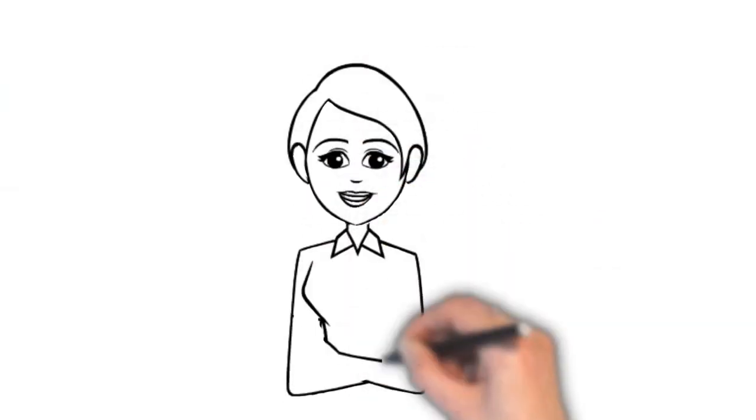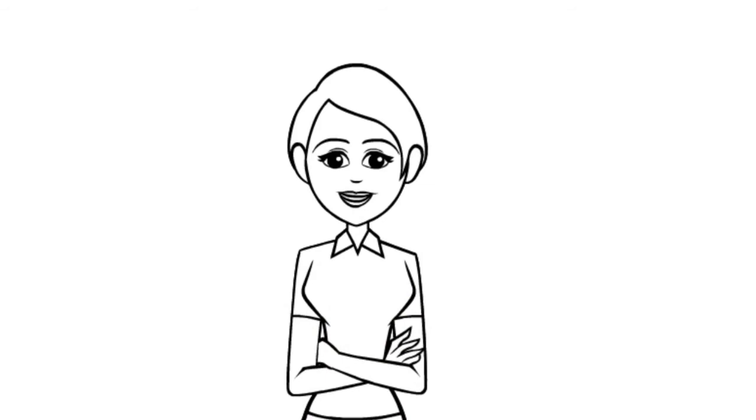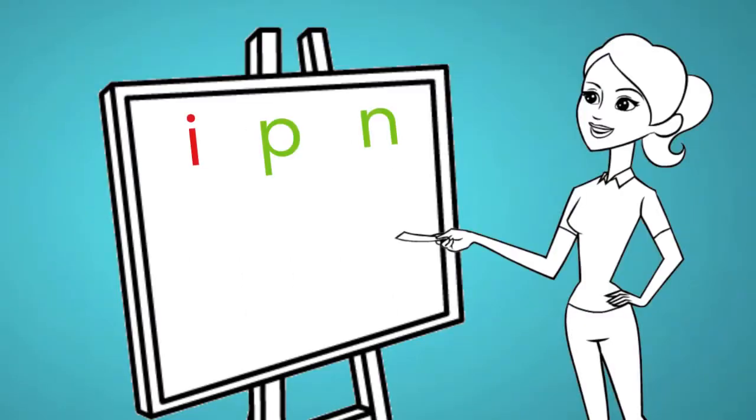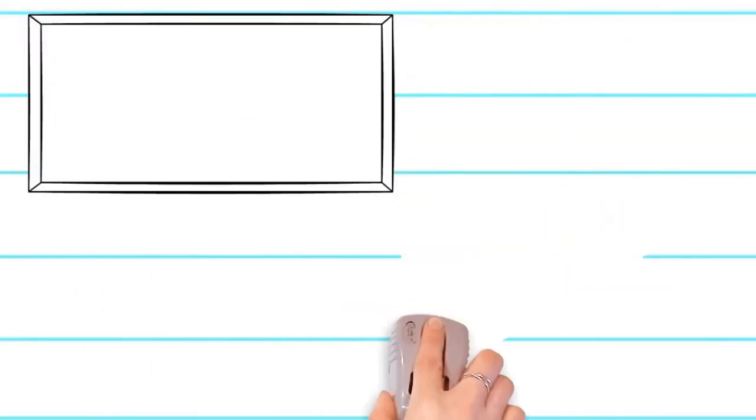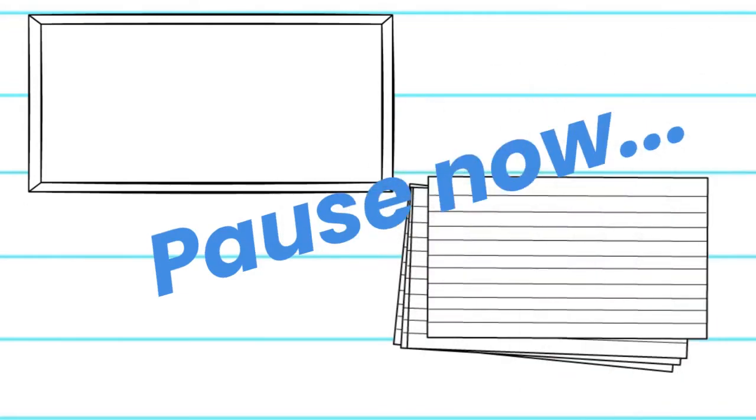Okay, I'm going to change things up a little bit. I've written on the board three letters: the vowel I and the consonants P and N. I'm going to draw a picture and your job is to use these three letters to write the correct word. You can spell this word on a whiteboard or on a piece of paper. Pause the video now to grab your supplies.